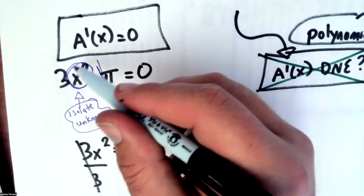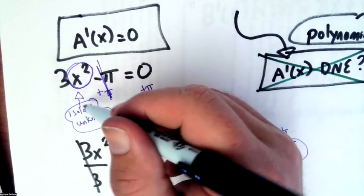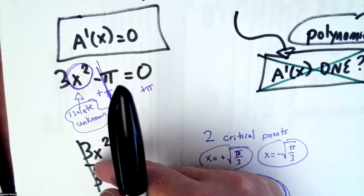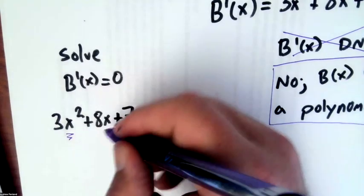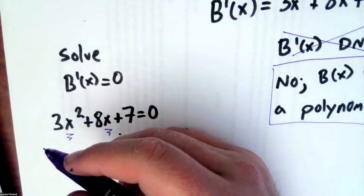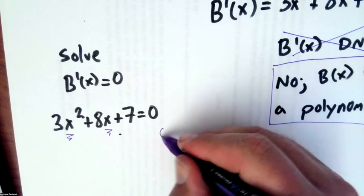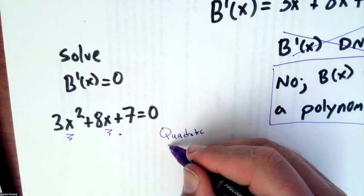You know why you do that here and you don't do that here. It's because when we looked at this, we only had one place that the unknown occurred. So we could isolate that x squared and make it happen. Here we have two places that the unknown occurs. So we're not going to be able to isolate x. And instead, this is a quadratic equation. And so we'll need the quadratic formula.